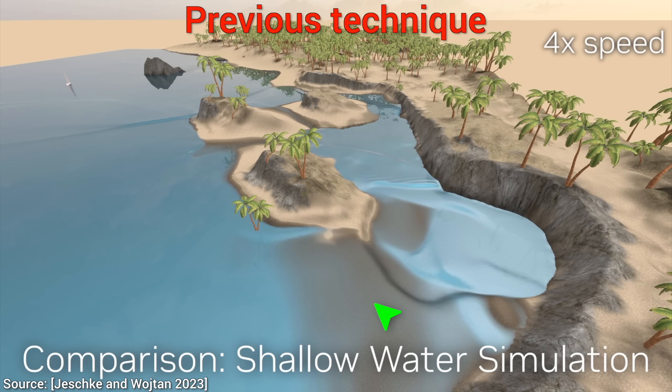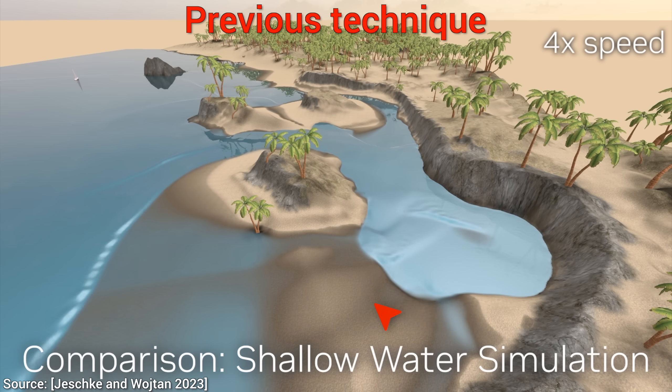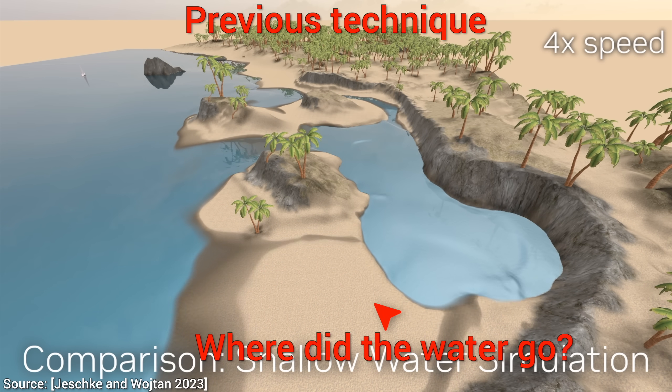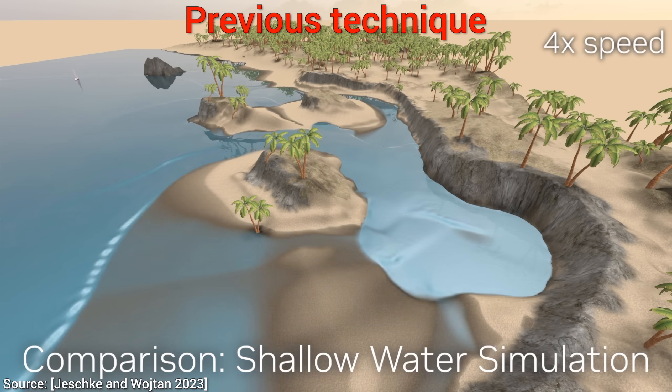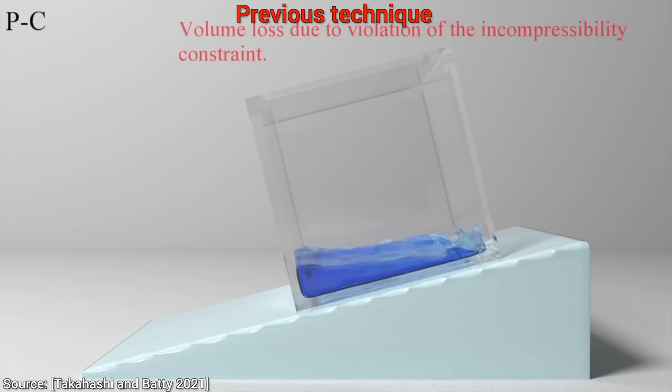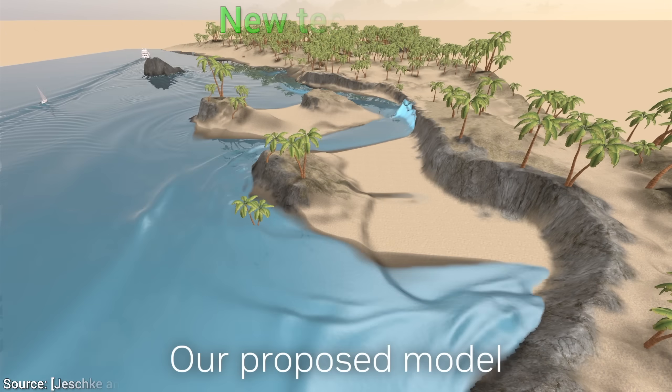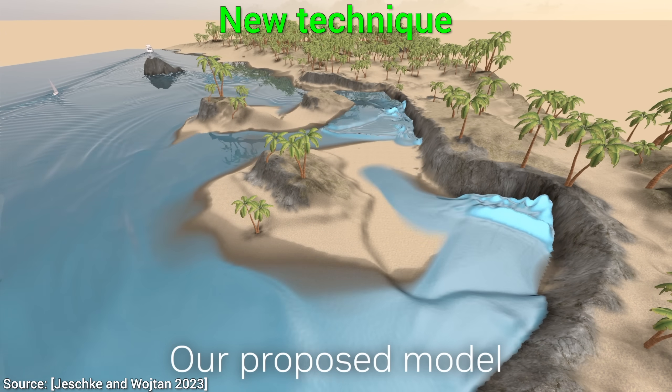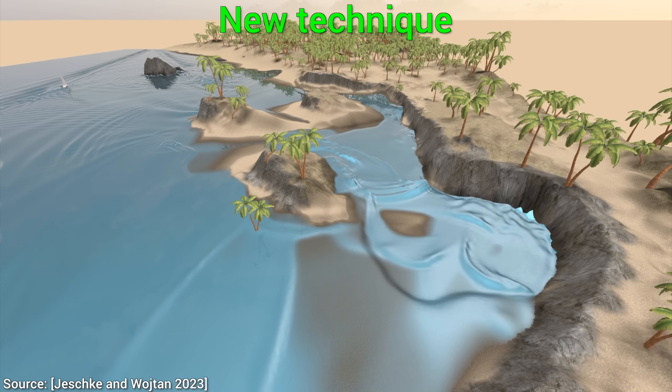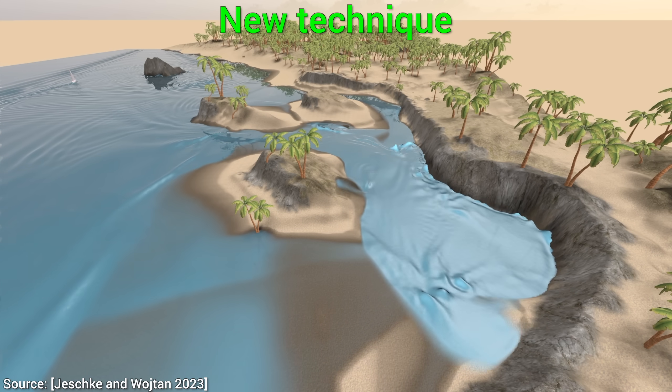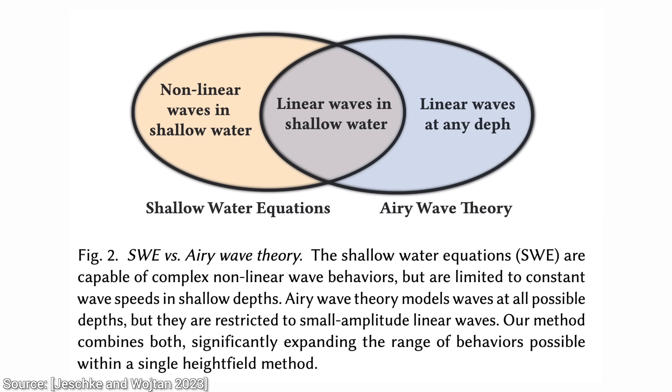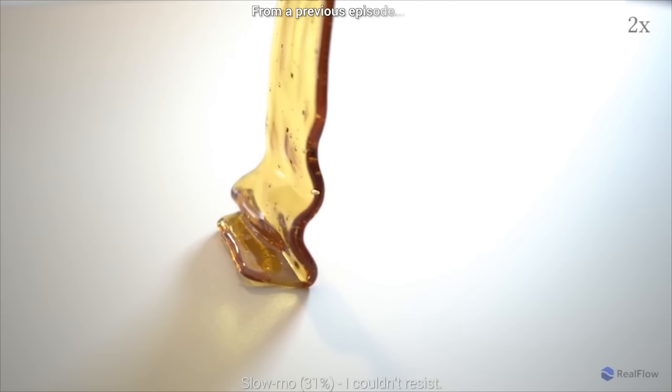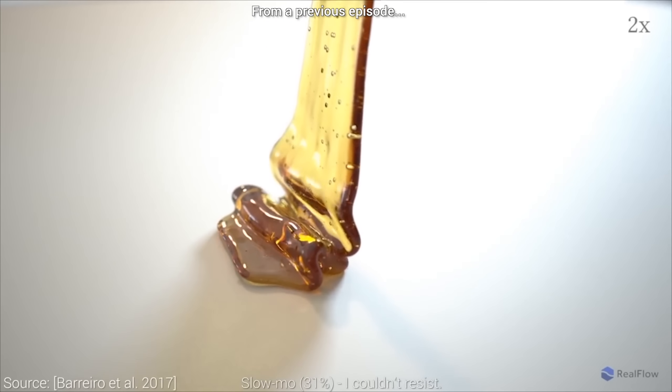One is that even shallow water simulations are not perfect. Look, water can just disappear from the simulation over time due to numerical inaccuracies. So, does the new technique solve that? Oh my, look at that! No more disappearing water. This is absolutely incredible, because this new technique is not just fusing two methods together, but it is also making them better. Loving it!